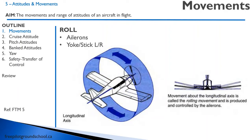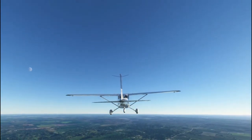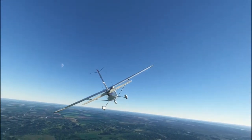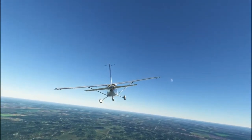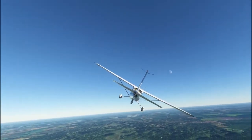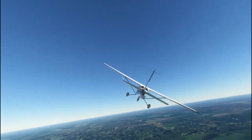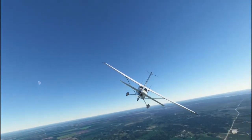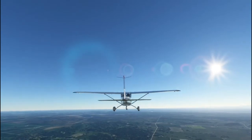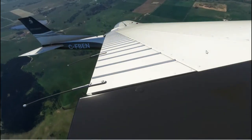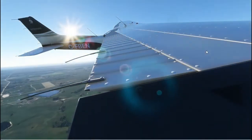Our second movement is roll. We use the ailerons to roll. That is accomplished by having the yoke or the stick moving it left or right. It's movement about the longitudinal axes. Here the aircraft is rolling to the left and to the right. You can see the ailerons on the wingtips moving the wings up and down, forcing the aircraft to roll. Let's take a wingtip view of the ailerons moving up and down, making the aircraft roll.